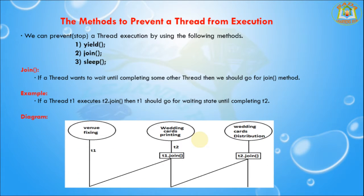Next, I am going to discuss about the join method. If a thread wants to wait until completing some other thread, then we should go for the join method. For example, if thread T1 executes t2.join, then T1 should go into the waiting state until completing thread T2.